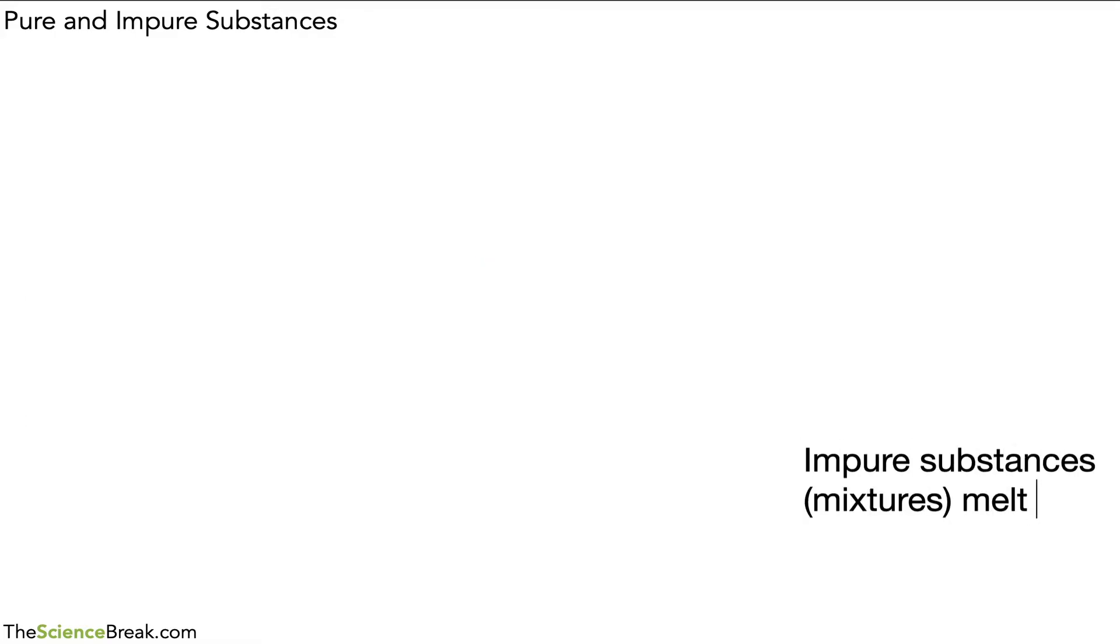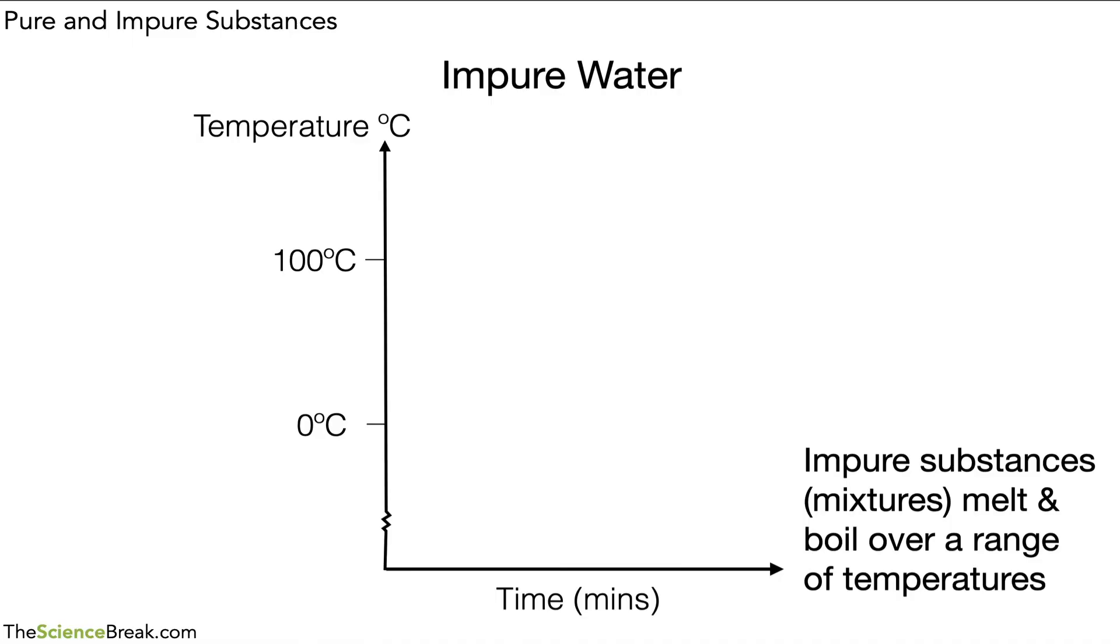What about if we have impure substances? Well, these melt and boil over a range of temperatures. So imagine we have some impure water, for example with some salt in it. We could do a graph similar to what we had before. We've got the boiling point and melting point there, and the graph would look slightly different in that the temperature would rise, but at the melting point it's not flat and at the boiling point it's not flat as it was in the last graph.